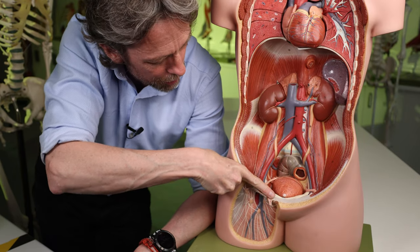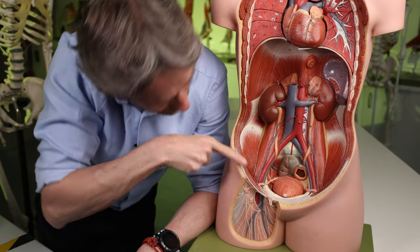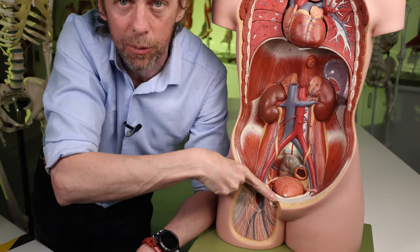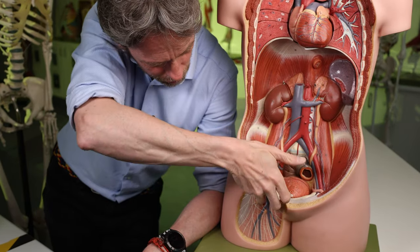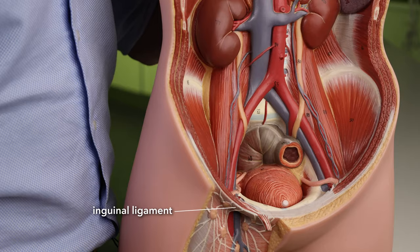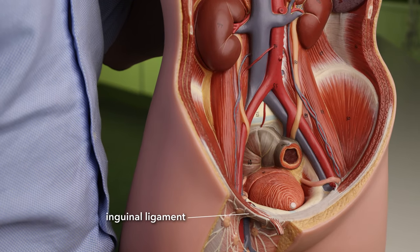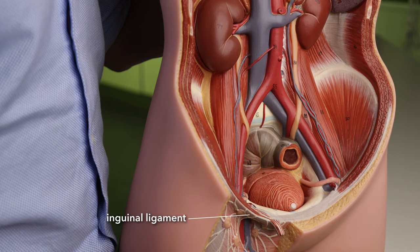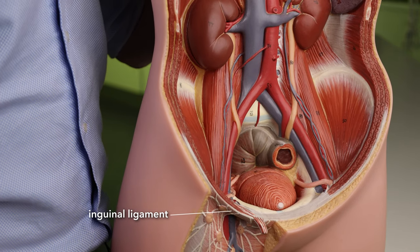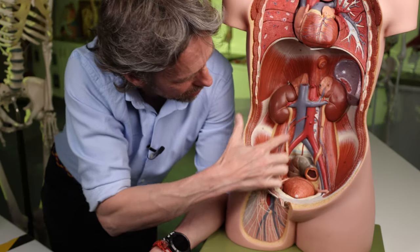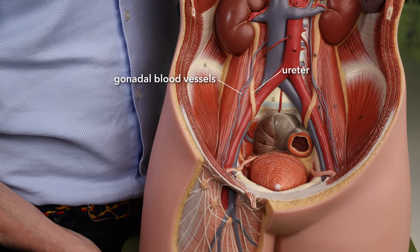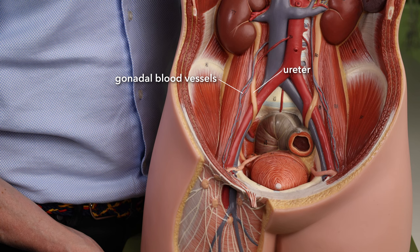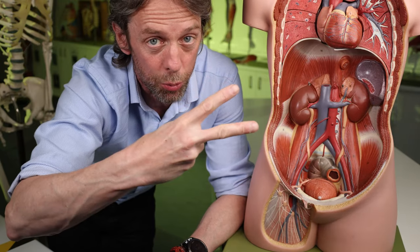Now it's going to run to the inguinal ligament, which is kind of where the anterolateral muscles of the abdominal wall end and the thigh begins. So it will run towards the inguinal ligament, deep to the ureter, deep to the gonadal vessels, and before it gets to the inguinal ligament it will bifurcate — it will split into two branches.